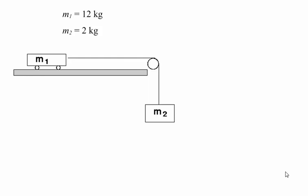M2 is going to fall downward — it's going to accelerate downward — and M1 is going to accelerate to the right. As I set this up, I'm going to let the direction that each block accelerates be the positive direction as I look at all the vectors. For each of these objects, I'm going to look at all of the forces acting on the object and use this to come up with relationships between the tension in the chord and the acceleration of the objects.